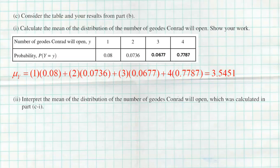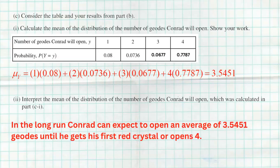What does that mean? The next part asks us to interpret the mean. My interpretation: in the long run, Conrad can expect to open an average of 3.5451 geodes until he gets his first red crystal or opens four. An expected value is an average in the long run. If he repeated this process many times — going until he opens four geodes or gets a red crystal — and kept a journal of each outcome, we'd expect to average 3.5451 geodes per attempt.